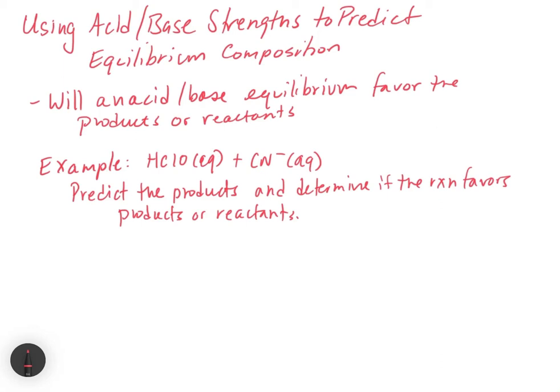In this video, we're going to extend that and look at what happens when we have two things in solution that are not necessarily water. Water will be around, but we'll also have an acid and a base in water, and we're going to look to see if we can figure out what the products should be and how we can determine the relative equilibrium composition.